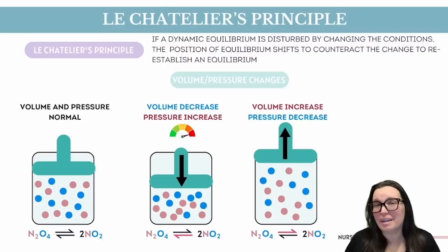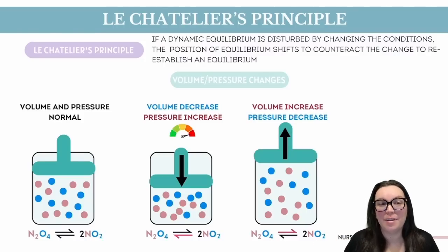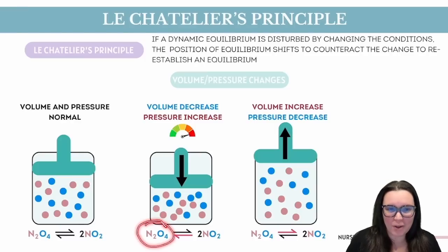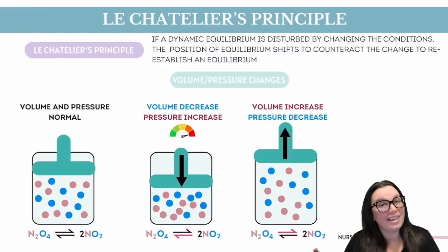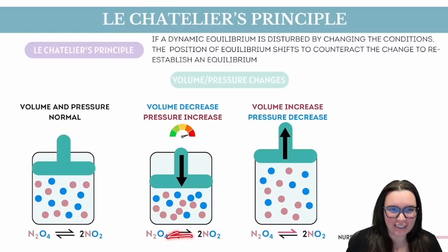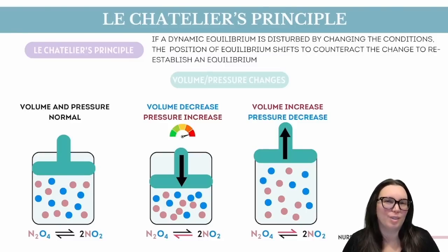Now, if there's a difference in the number of particles or moles on each side of the equilibrium, the system will shift towards the side with fewer particles to reduce some of that extra pressure. In an equilibrium involving diatomic molecules on the left side and two separate atoms on the right side, the right side with those two atoms technically has twice as many moles. By shifting that equilibrium to the left, it's going to lead the particles to combine, resulting in fewer total particles, which helps lower the pressure.